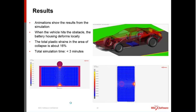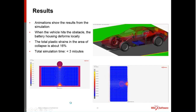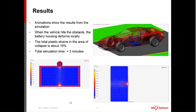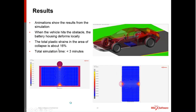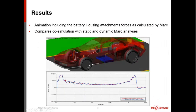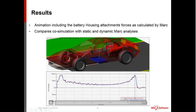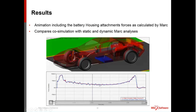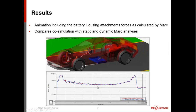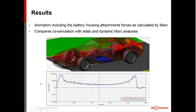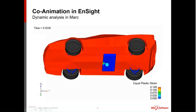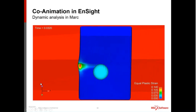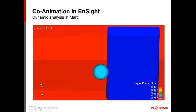The results show the static analysis takes less than three minutes when run quasi-statically. When the vehicle hits the obstacle, we get local deformation with about 11 to 16 percent plastic strains. The plot compares static versus dynamic MARC analysis — more active response with dynamic simulation — though it remains to be seen whether that's important enough to justify the performance cost. The co-animation driven by N-Site shows the vehicle impacting the obstacle and the battery housing displaying plastic strain and von Mises stress.